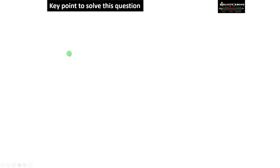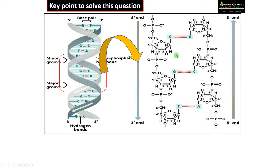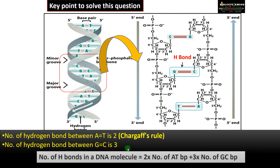Here is an easy method to count hydrogen bonds. In a double-stranded DNA, zooming into the base pairs, you can see the hydrogen bonds. Guanine pairs with cytosine by three hydrogen bonds, whereas thymine pairs with adenine through two hydrogen bonds. So the number of hydrogen bonds between adenine and thymine is two, and guanine and cytosine is three. Therefore, the formula is: number of hydrogen bonds = 2 × (number of AT base pairs) + 3 × (number of GC base pairs).